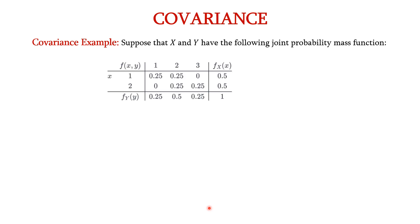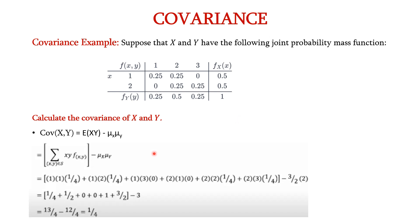Let us see an example for covariance. Suppose that x and y have the following joint probability mass function. We have to calculate the covariance in terms of x and y. The formula is E of x y minus mu x into mu y, rewritten as summation of x y into f of x y minus mu x mu y. Here x is the row and y is the column. So 1 into 1 into 0.25 (that is 1 by 4), plus 1 into 2 into 1 by 4, plus 1 into 3 into 0, plus 2 into 1 into 0, plus 2 into 2 into 0.25 (that is 1 by 4), plus 2 into 3 into 1 by 4, minus mu x mu y.